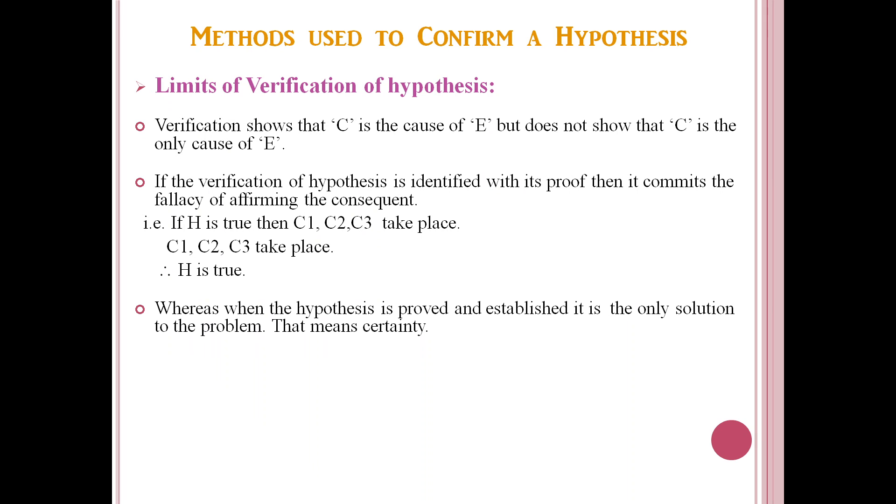Whereas when the hypothesis is proved and established, it is the only solution to the problem, that means certainty. It is if and only if hypothesis H, then the consequences C1, C2, C3 take place. The consequences C1, C2, C3 take place, therefore the hypothesis H is true.